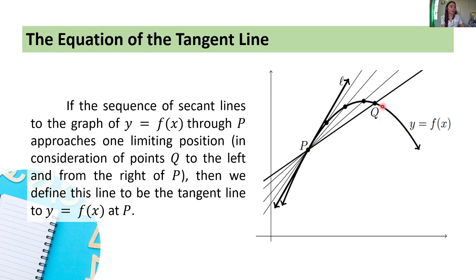When we take points to the left of Q and draw a secant line, and then another point with another secant line, and another point — draw a line between that point and our point P — another secant line — this line L will be the tangent line.